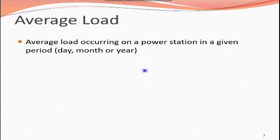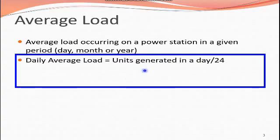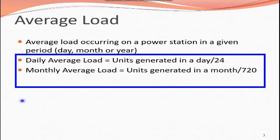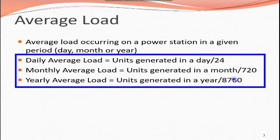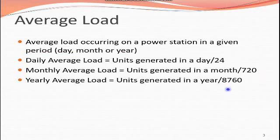There are different formulas for average load. Daily average load is equal to units generated in a day divided by 24 hours. Monthly average load is equal to units generated in a month divided by 720 hours. Yearly average load is equal to units generated in a year divided by 8760 hours. You can calculate it according to your requirements.